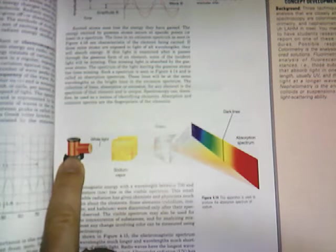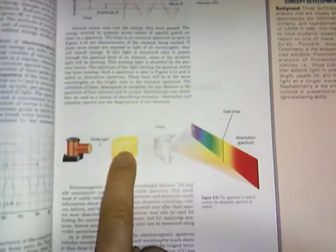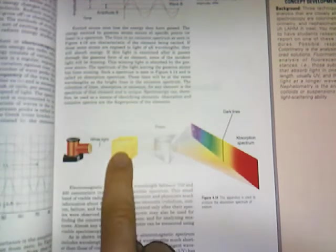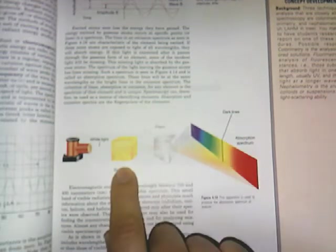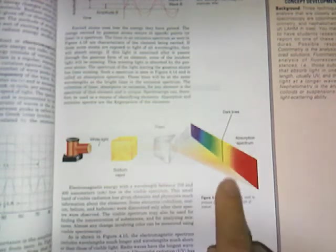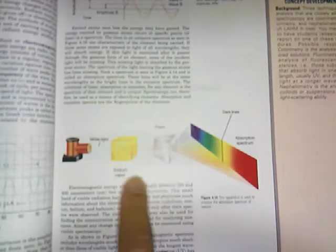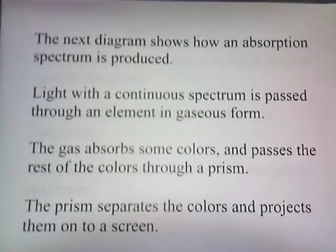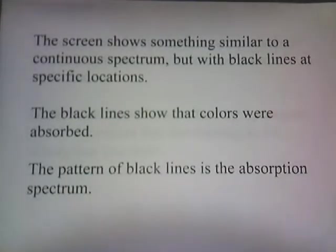White light or incandescent light is passed through an element — in this case, sodium vapor. The sodium vapor absorbs some of the light. All the rest of the colors pass through the prism and are projected onto a screen. Since the sodium absorbs some of the colors, some are missing. Sodium has a yellow color, so when we look at the absorption spectrum, we see dark lines. These dark lines represent the particular wavelength of yellow that is absorbed by the sodium, and this pattern of dark lines is the absorption spectrum of sodium. The screen shows something similar to a continuous spectrum, but the black lines at specific locations show that colors were missing — and the pattern of black lines is the absorption spectrum.